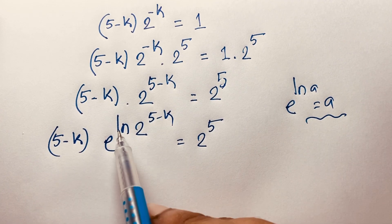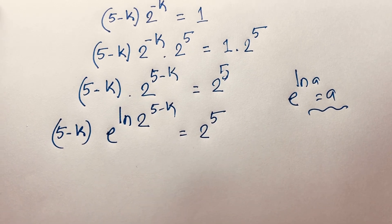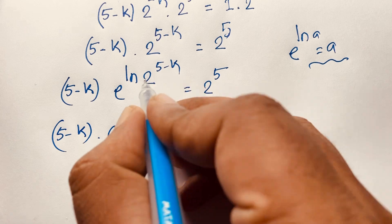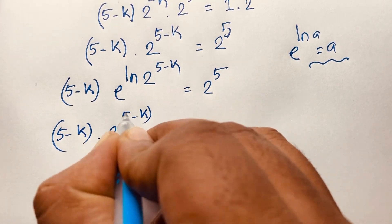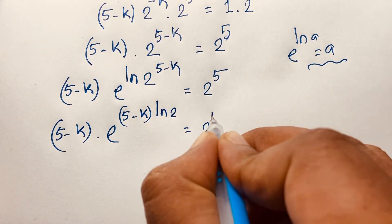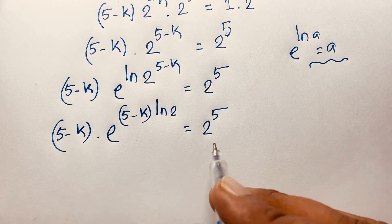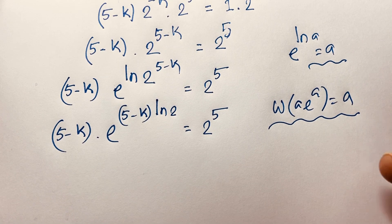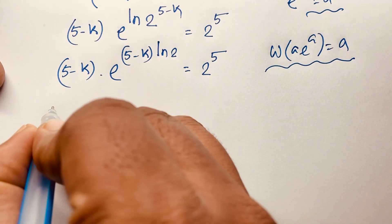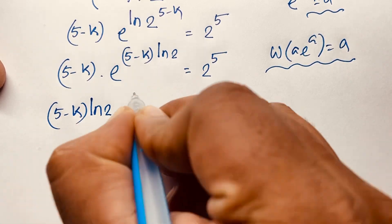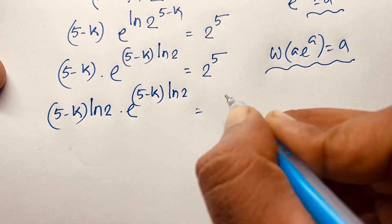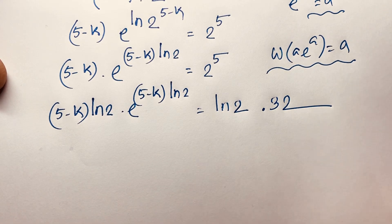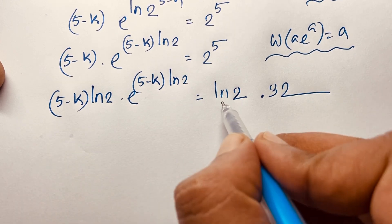Using the formula e to the power ln(a) equals a, here a equals 2 to the power (5 minus k). I move the (5 minus k) factor out front, giving (5 minus k) times e to the power ((5 minus k) times ln 2) equals 2 to the power 5, which is 32. Now I multiply both sides by ln 2 to prepare for the Lambert W function.